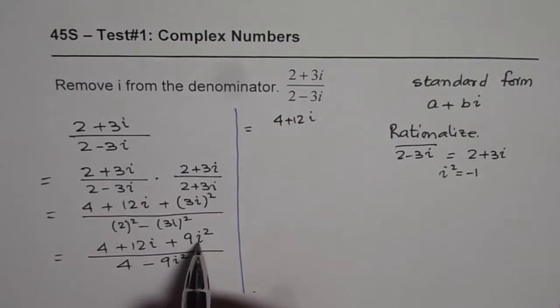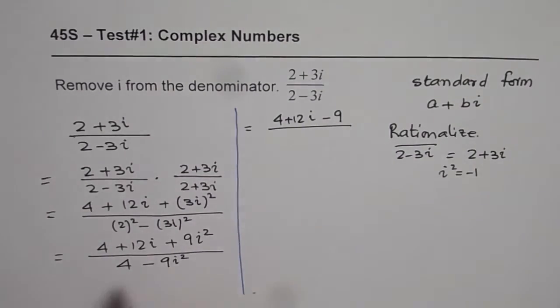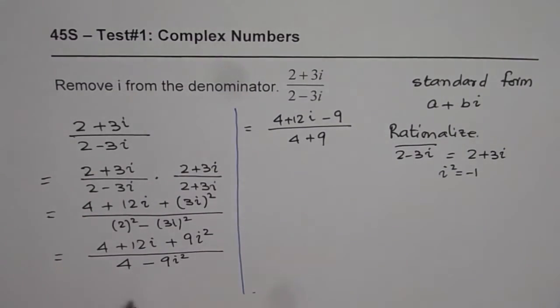So we can replace i square with negative 1, so we get negative 9 now, divided by, in the denominator, we get 4 plus 9, since i square is negative 1.